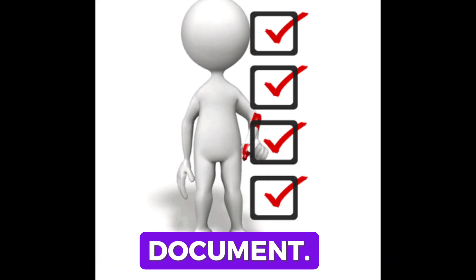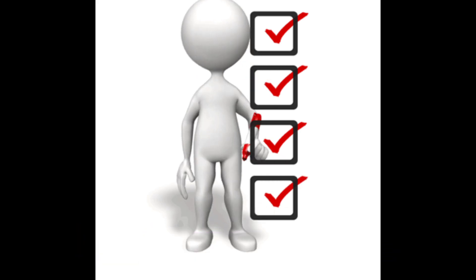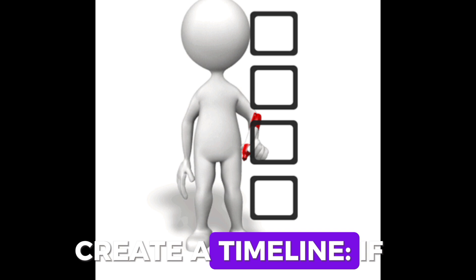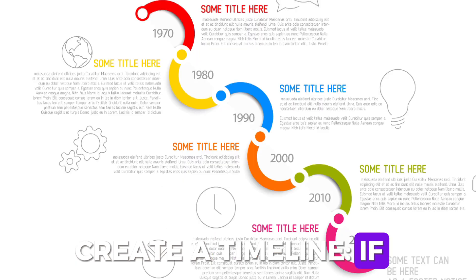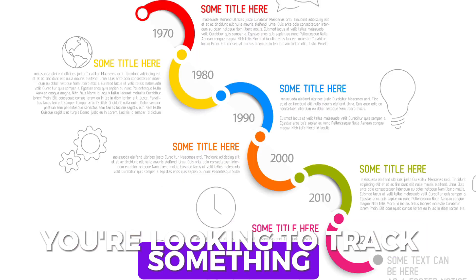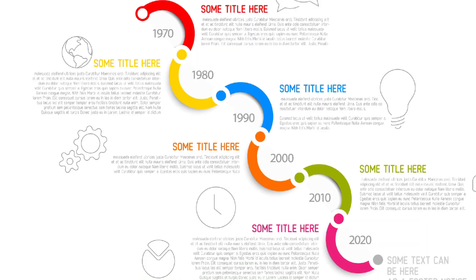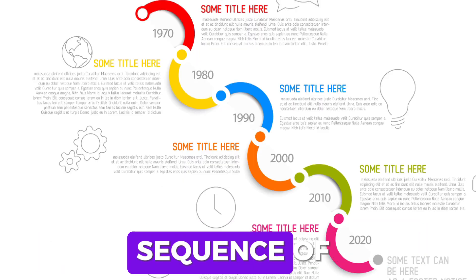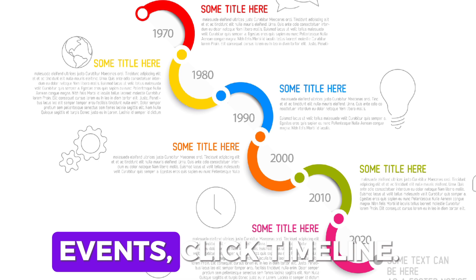Step 8: Create a Timeline. If you're looking to track something in chronological order or piece together a sequence of events, click Timeline.